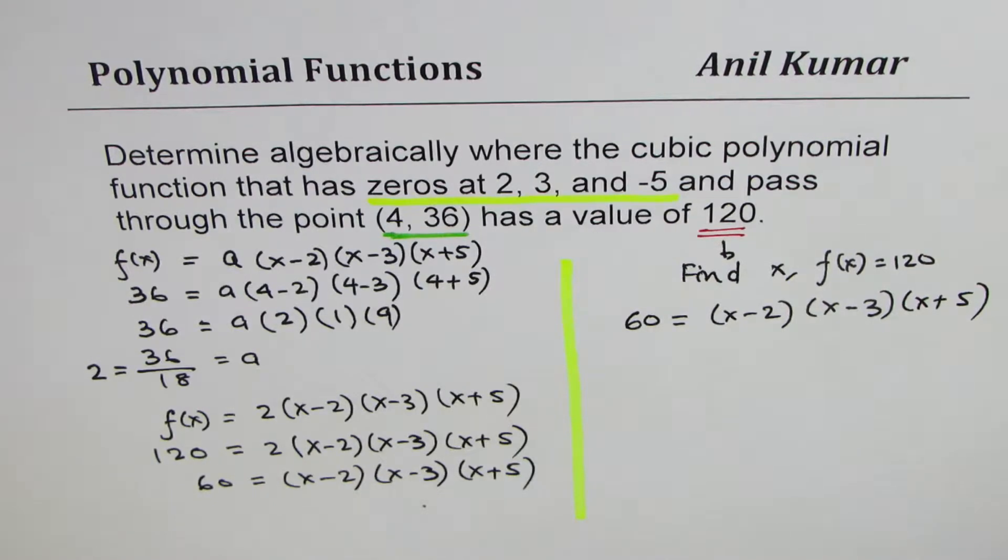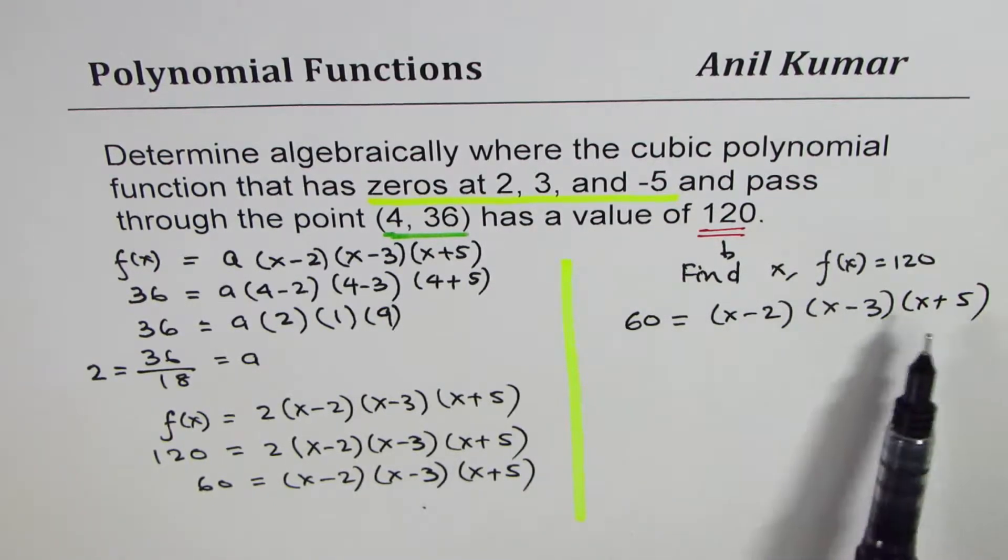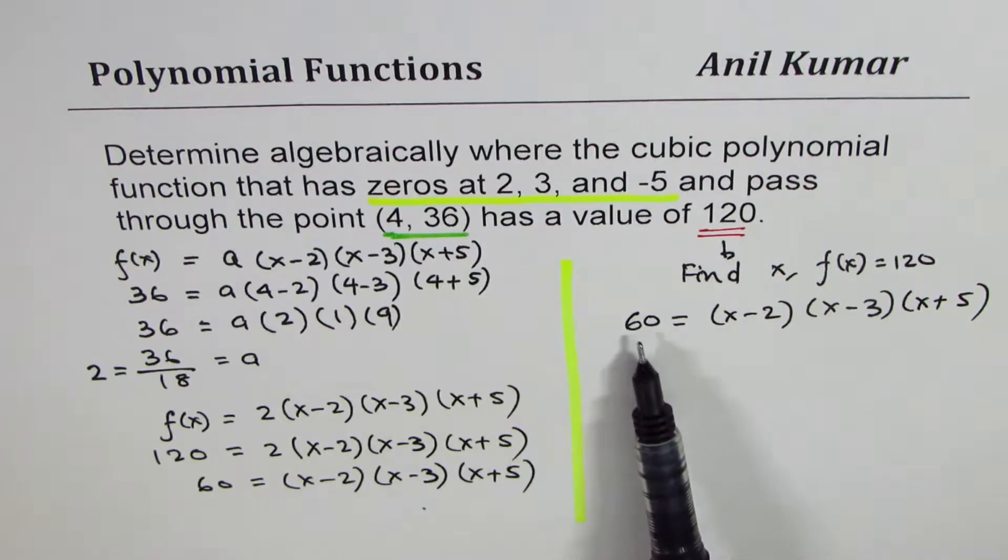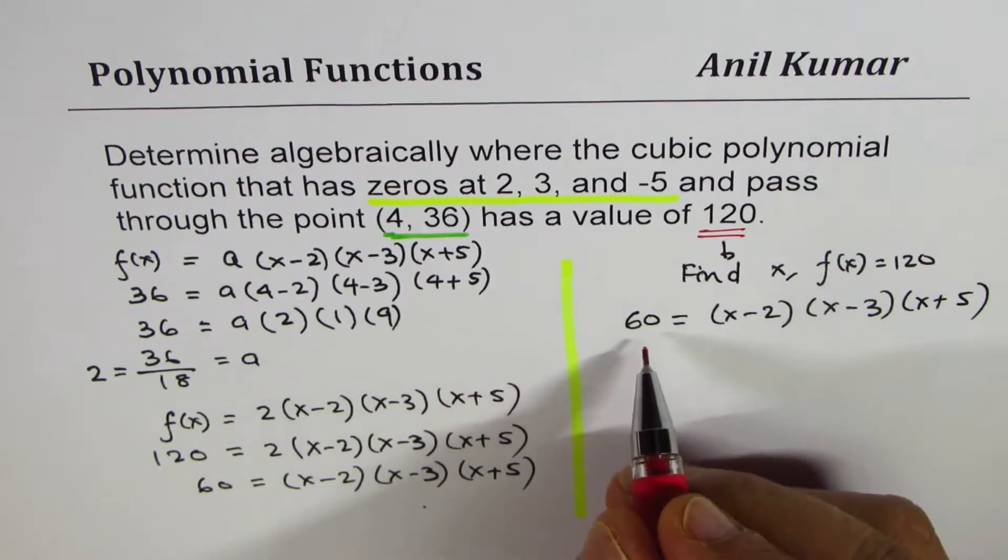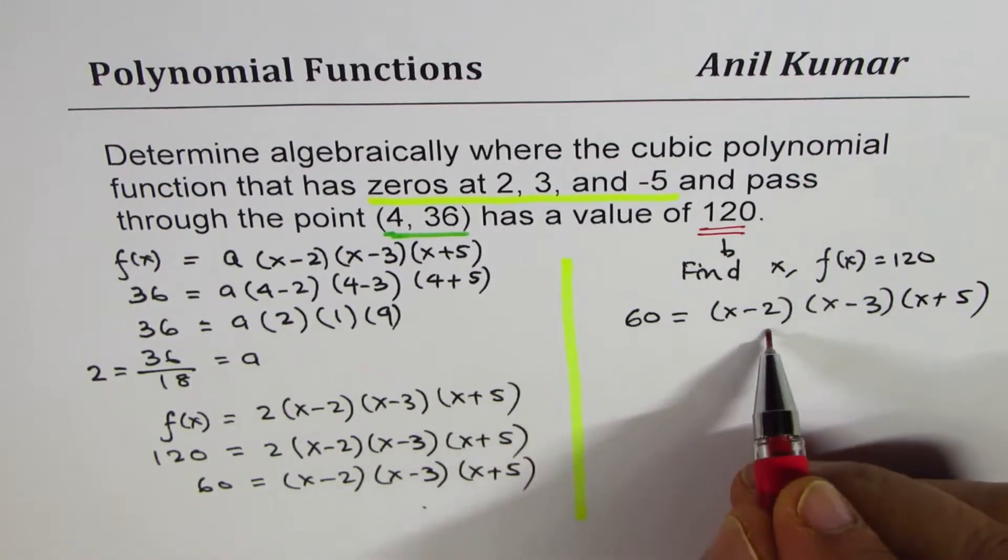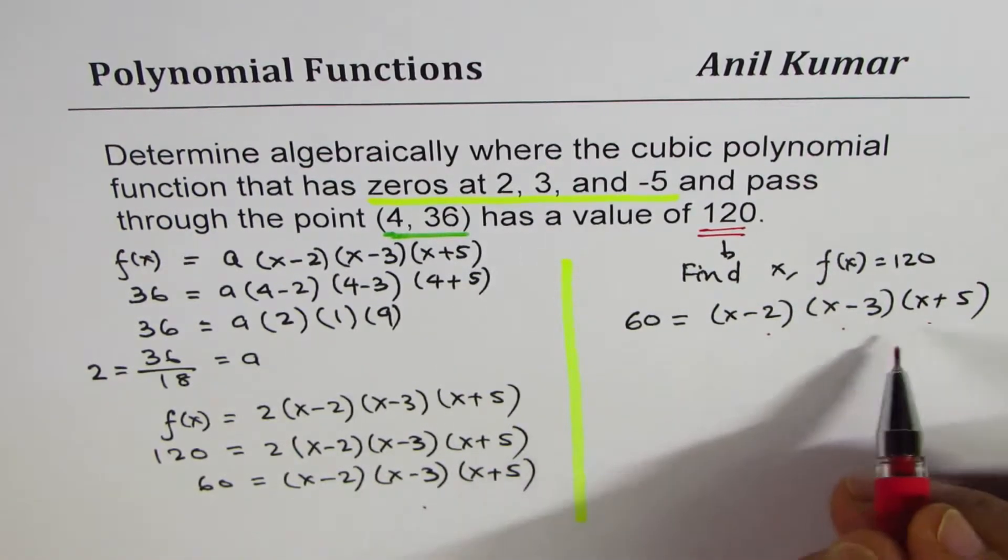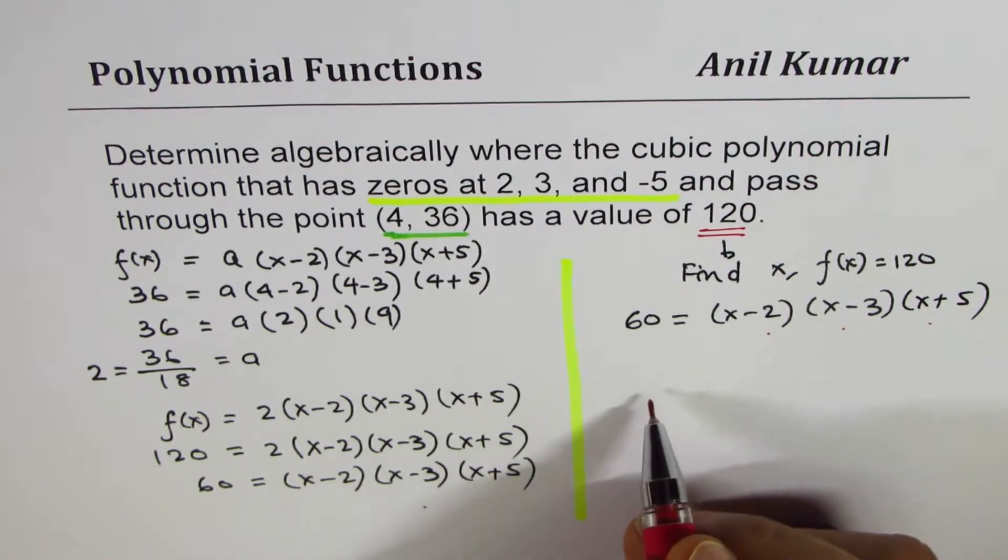One of the methods here is, of course, to expand all this, you get a cubic equation and solve, bringing 60 to the right side and solve the equation. Now, what I suggest here is a different approach. How do we get 60 by multiplying three numbers? This is what we need to think.